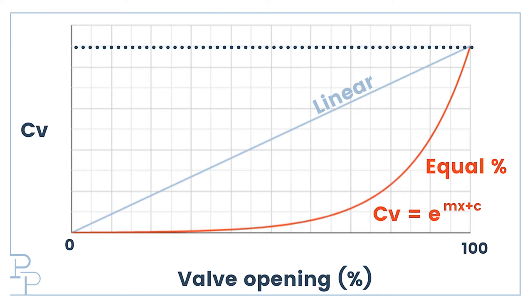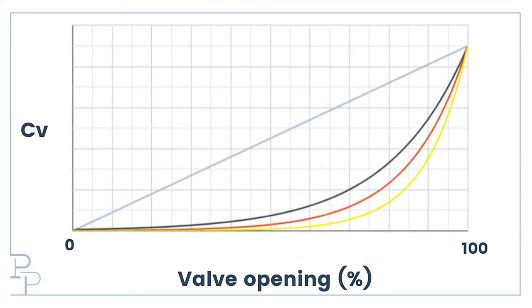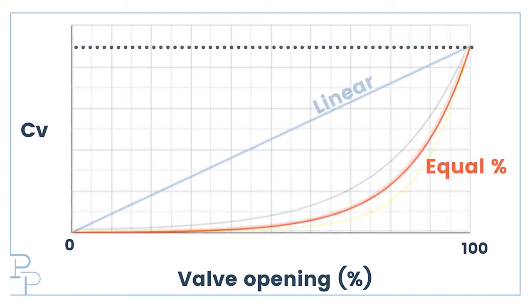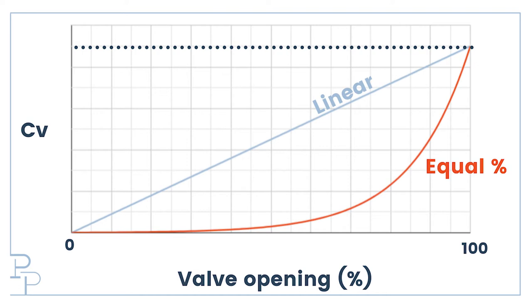Last time we also uncovered that it is possible to have multiple equal percentage valves with the same CV when they are 100% open, and therefore that we need at least one other point to fully define the behavior of an equal percentage valve apart from the point when it is fully open. But why do we need equal percentage valves? They don't behave like this by accident — they are designed to act like this.